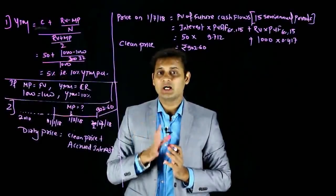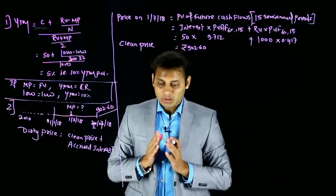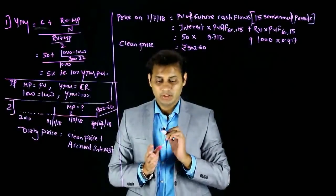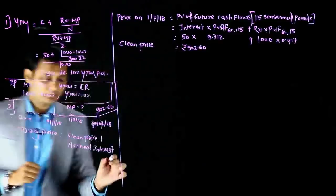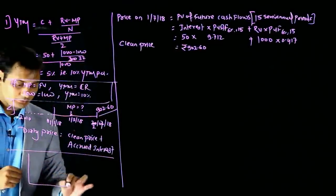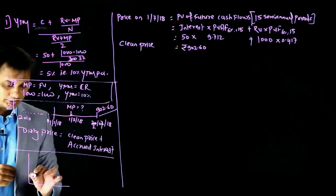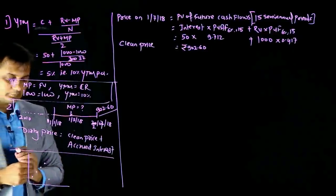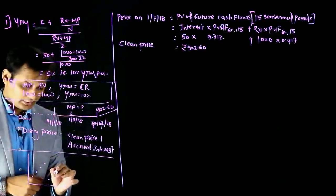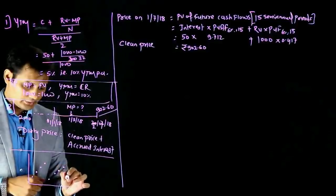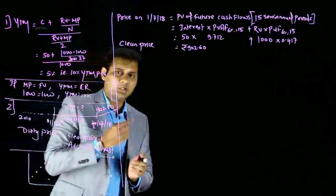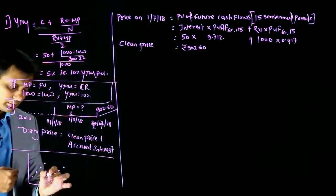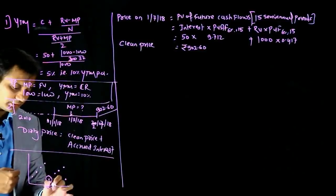So you need to add ₹50 directly. The dirty price on June 30 would be ₹902.6 + ₹50 = ₹952.6. If you've seen the concept video on dirty price, you'll recall the graph showing how dirty price rises then drops at the coupon date. The ₹902.6 is the clean price on July 1.